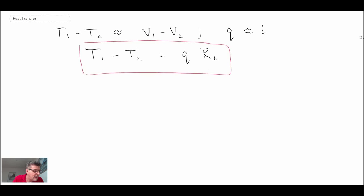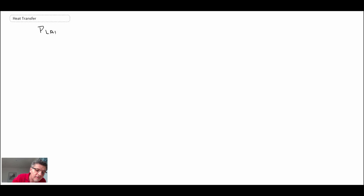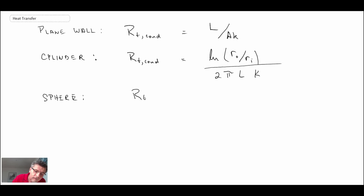So what we're going to do now, let's take a look at all of these. Looking at a plane wall, we have a thermal resistance equal to the thickness of the wall divided by the area multiplied by the thermal conductivity. And then repeating that for a cylinder and a sphere. So that is for a plane wall, a cylinder, and a sphere.